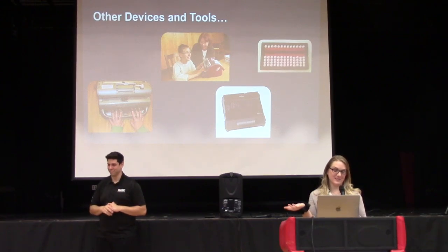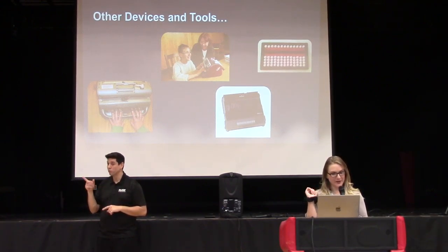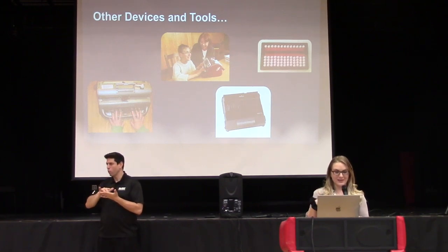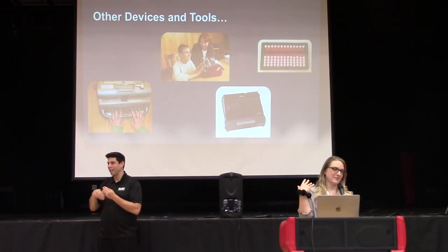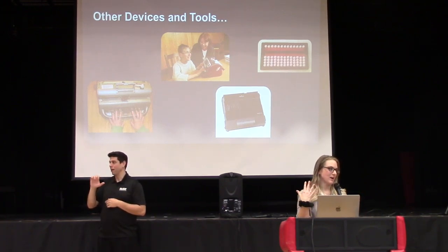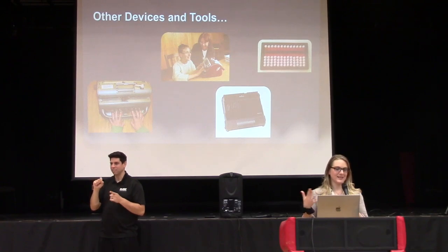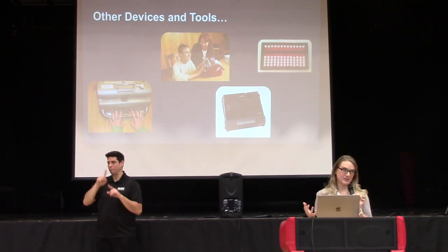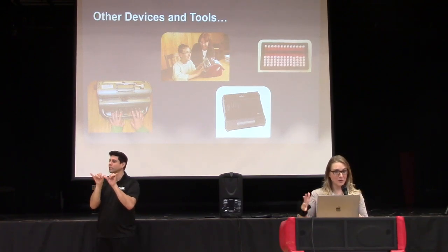Some other devices and tools you might see include a Perkins Brailler, a Smart Brailler, a BrailleNote, and an Abacus. This slide is not for you to memorize what they are, but to get an idea of how big some of these devices are and how much table space they might take up.